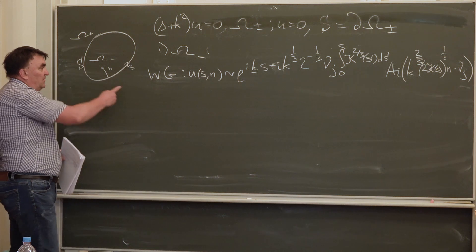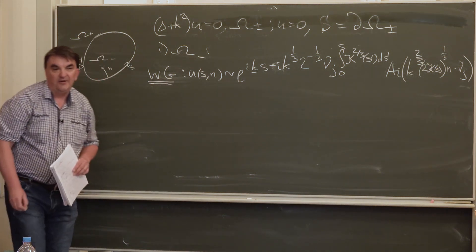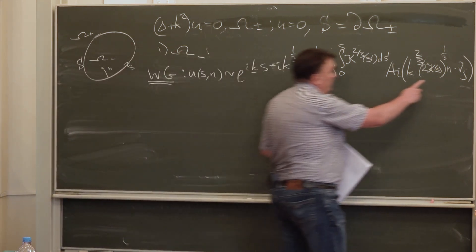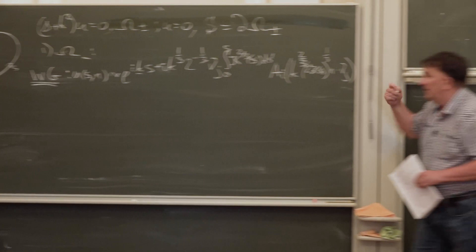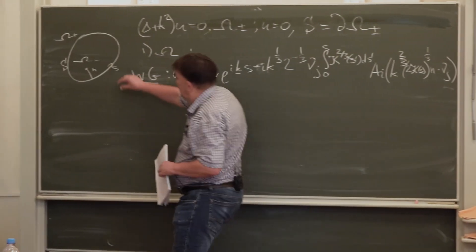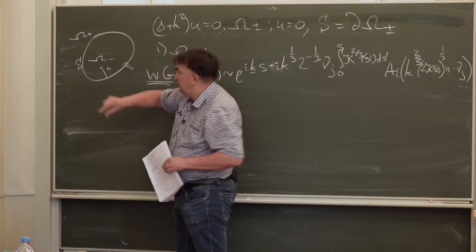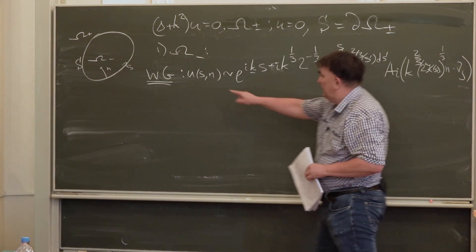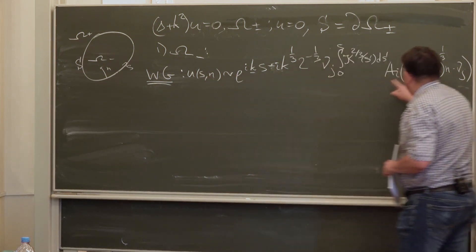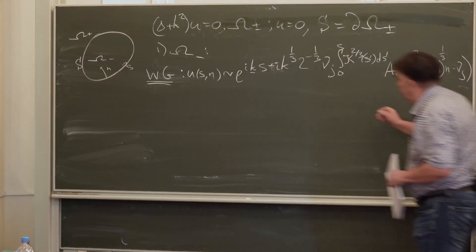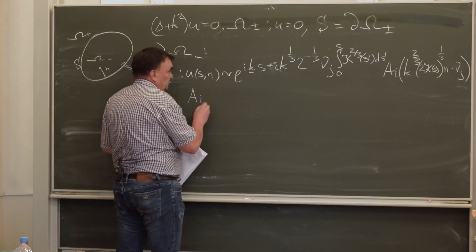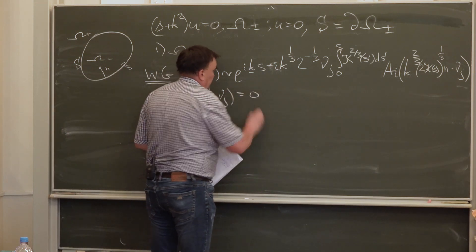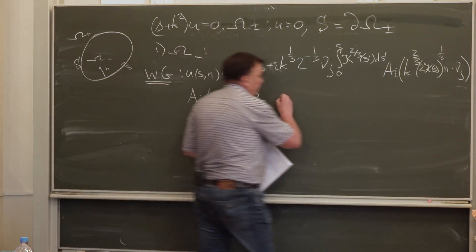These solutions tend to be localized in a small neighborhood of the boundary. In the respective coordinates S and N, they have a particular form in terms of the Airy function. Specifically, the Airy function evaluated at minus nu_j, where nu_j is a root of the Airy function.